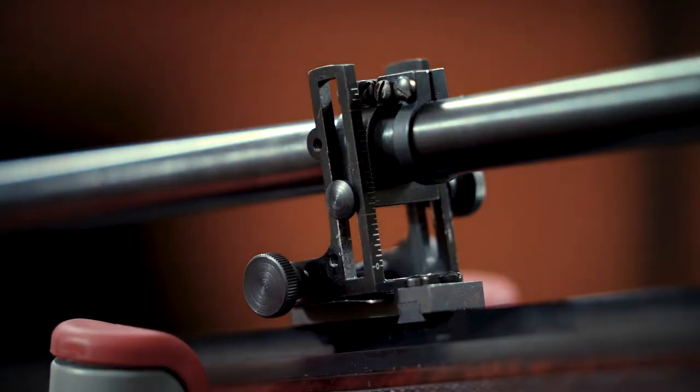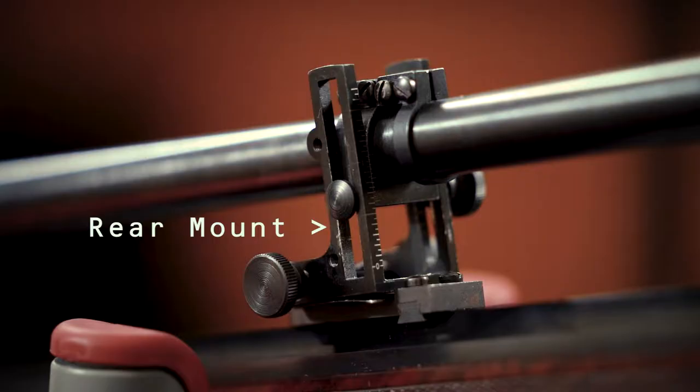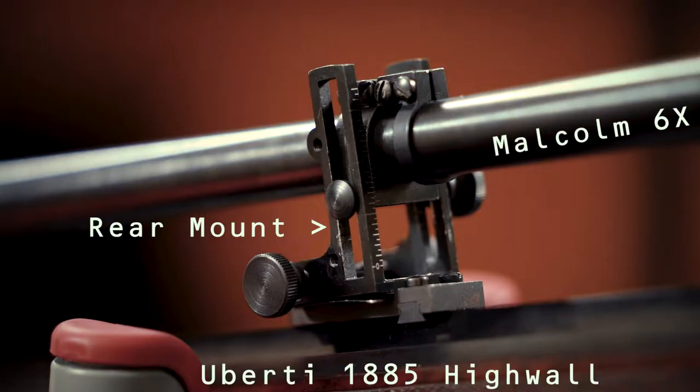Hi, this is Scott with Hilux Optics. In this video, we will be installing the rear mount for the Malcolm 6 Power Long Rifle Telescope on a Huberti 1885 high wall with a 30-inch octagon barrel.